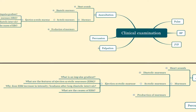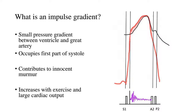I have formulated four questions. Try and answer them yourself and it's all right even if you don't know the answers because we're going to tackle them anyway subsequently. The first question is: what is an impulse gradient? Now this is a normal phenomenon which is seen in normal people. It essentially means it is a small pressure gradient which is present between the ventricle and the great artery — either between the LV and the aorta or between the RV and the pulmonary artery.